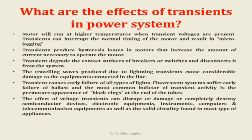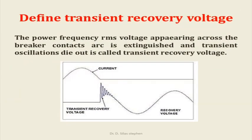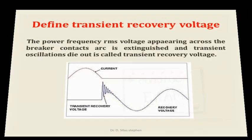What are the effects of transients in power systems? The motor will run at high temperature, produces hysteresis losses, and decreases the contact surface of breakers. Define transient recovery voltage: the power frequency RMS voltage appearing across the breaker contact after the arc is extinguished and transient oscillations die out is called transient recovery voltage.